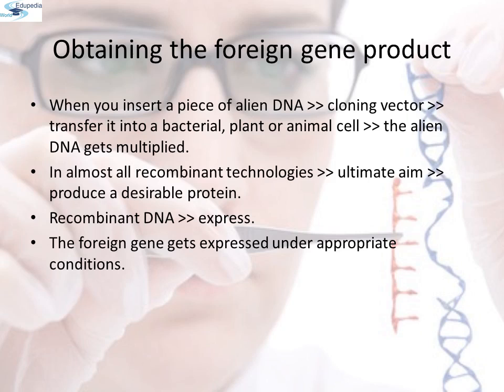Obtaining the foreign gene product: when you insert a piece of alien DNA into a cloning vector and transfer it into a bacterial, plant, or animal cell, the alien DNA gets multiplied. In almost all recombinant technologies, the ultimate aim is to produce a desirable protein. Hence there is a need for the recombinant DNA to be expressed, and the foreign gene gets expressed under appropriate conditions.